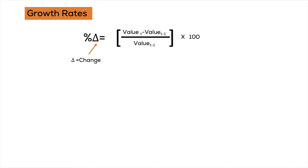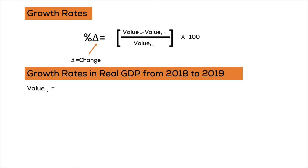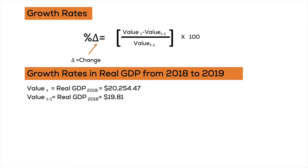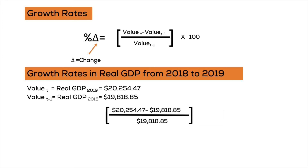Let's look at our data going from 2018 to 2019, measuring the percentage change in real GDP. Value t is real GDP in 2019; value t minus 1 is real GDP in 2018. Real GDP in 2019 was 20.2 trillion dollars, minus real GDP in 2018, which was 19.8 trillion dollars. We divide that difference by 19.8, then multiply by 100. You should get 2.198%, so the growth rate from 2018 to 2019 was roughly 2.2%.